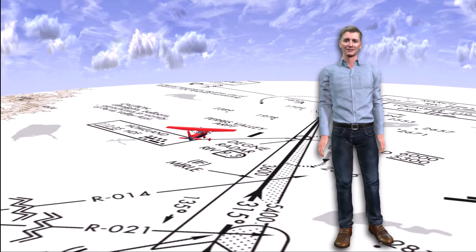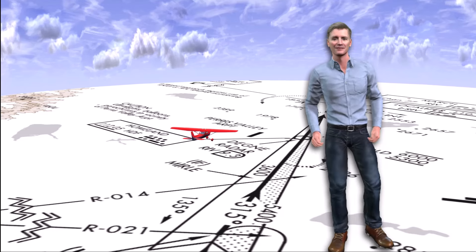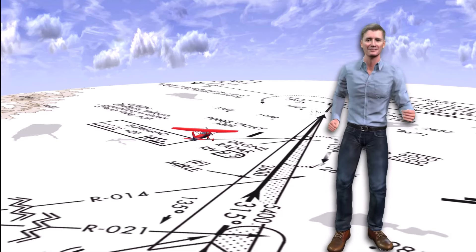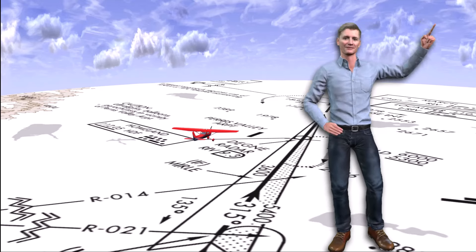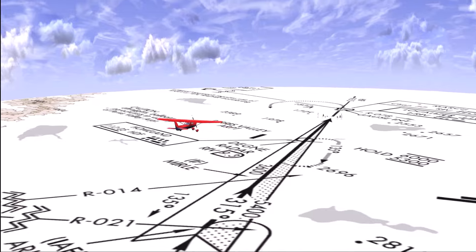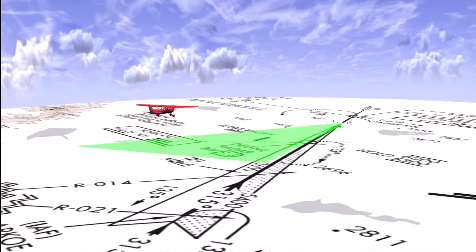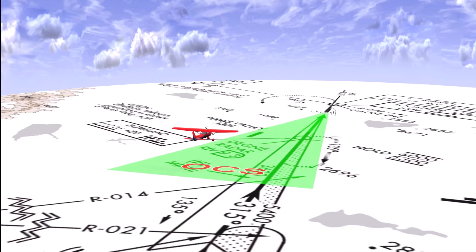So let's look at the obstacle protection you're afforded on an ILS approach to better understand why sloppy tracking skills can put you at greater risk during an IFR approach. First, there is a sloping plane, colored green here, below the glide slope known as the OCS or Obstacle Clearance Surface. Obstacles are not allowed to penetrate the surface.